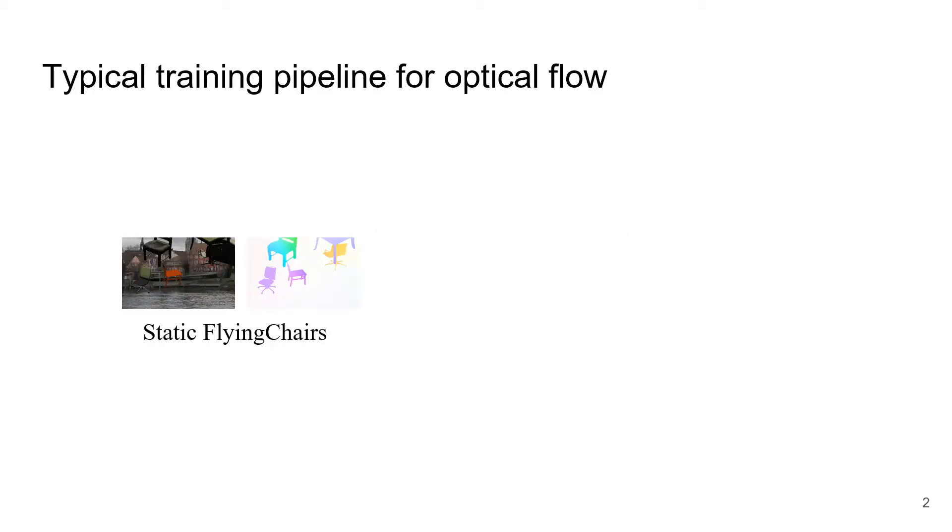A typical training pipeline for optical flow starts with a static dataset, often flying chairs. After a model is trained on flying chairs, it is evaluated on a target dataset, say, Sintel. There may be a lot of trial and error to adjust the model for good performance on the target dataset.